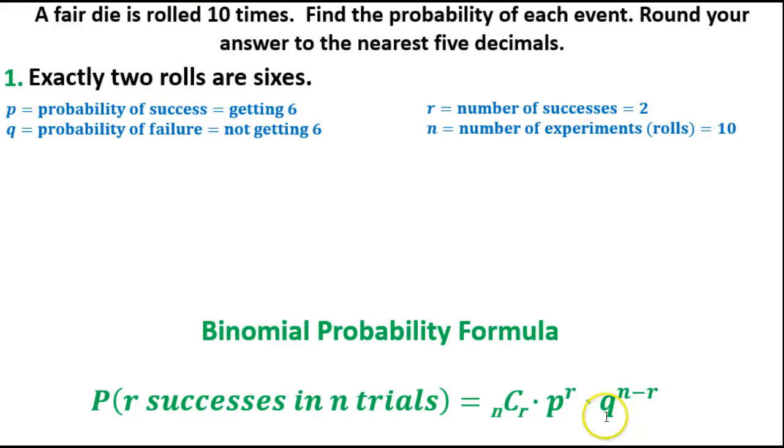Now we're going to take this formula and start filling out the information that we know. Probability of R successes and N trials. We want the probability of getting exactly two sixes. First we're going to pull in our combinations formula here, which is N factorial over R factorial times N minus R factorial.